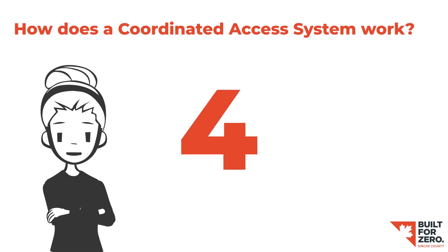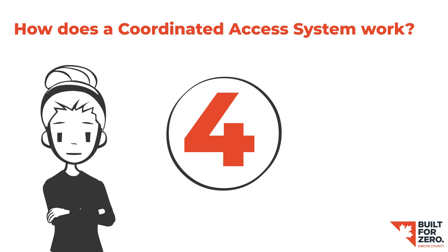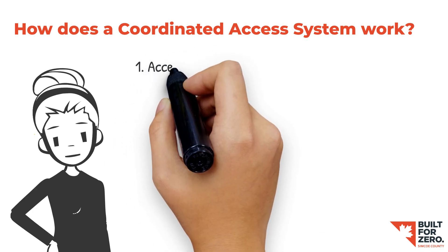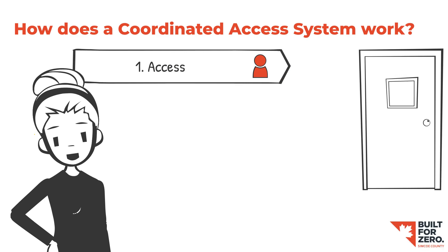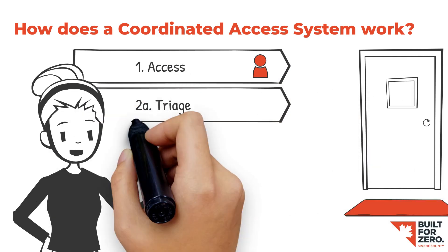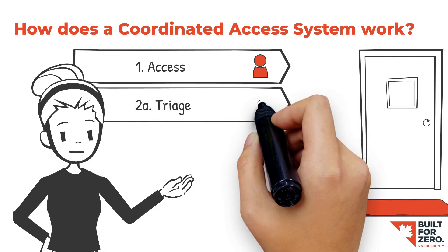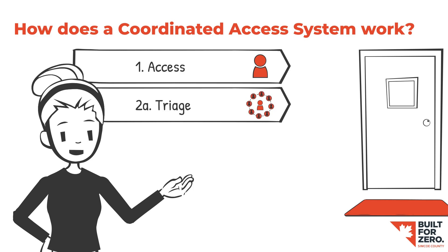There are four distinct steps in a coordinated access system. The first is Access — the first point of contact with a trained worker. The triaging process helps to ensure safety and also to prevent homelessness, as well as connecting with other services, including informal and natural supports to avoid a shelter stay.